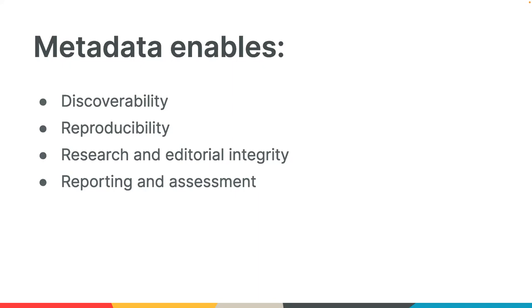Metadata enables four key things. First, discoverability: our books metadata project showed that books with basic metadata are more likely to appear in Google Scholar searches, and journal articles with deposited references tend to be cited more often. Second, reproducibility: linking to funding, protocols, or research data helps create a complete picture of a work. Third, integrity: metadata reveals who funded the project and author affiliations, highlighting potential conflicts of interest. Fourth, reporting and assessment by universities and funders to show accountability, benchmarking, and compliance with funder mandates.